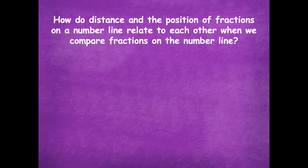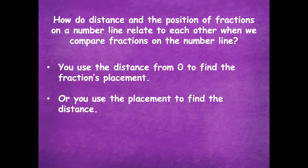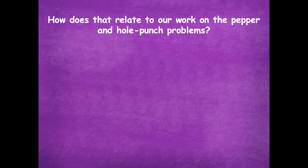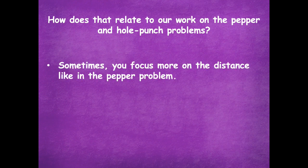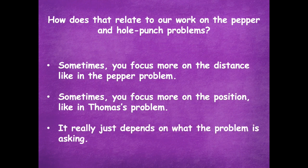How do distance and position of fractions on a number line relate to each other when we compare fractions? You use the distance from zero to find the fraction's placement, or you use the placement to find the distance — they're both part of comparing, and which one you focus on depends on what you're trying to find out. Sometimes you focus more on distance, like in the pepper problem, and sometimes more on position, like in Thomas's problem. It depends on what the problem is asking, so it takes some practice — but don't worry, we're going to keep working on it.